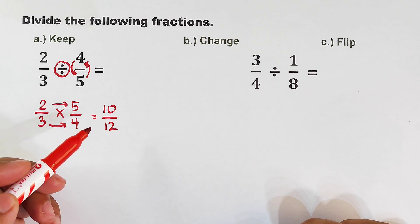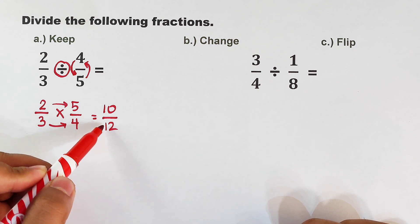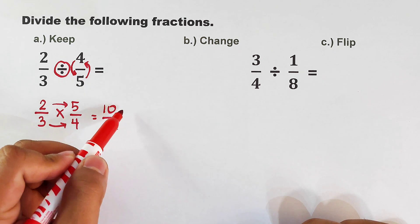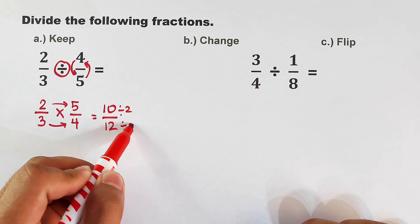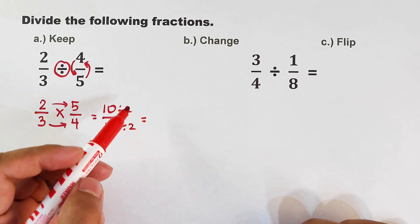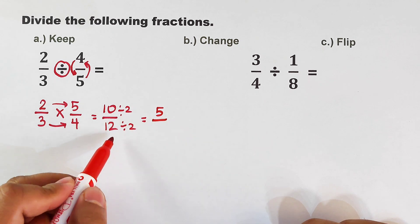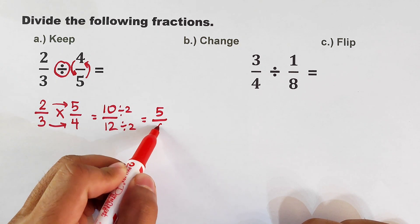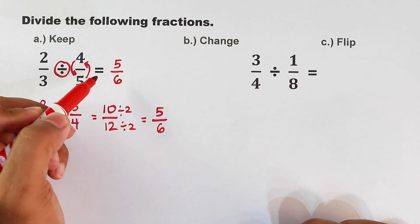The basic rule after multiplying fractions: we need to check if we can still simplify this fraction. Since this is 10 over 12, we can still divide this by 2 and divide this by 2, and it will give you 10 divided by 2 which is equal to 5, over 12 divided by 2 that is equal to 6. The final answer is simply 5 over 6.